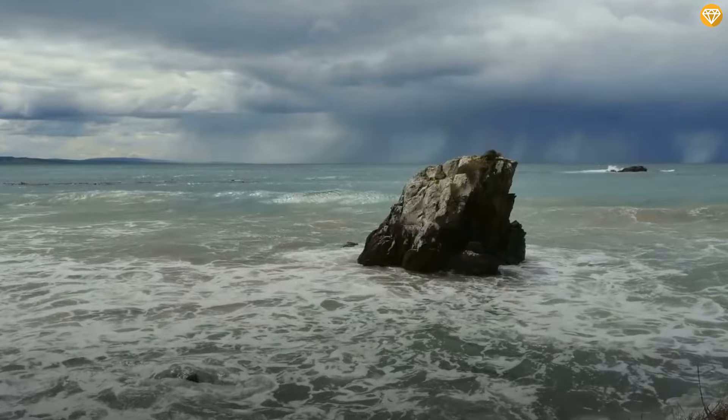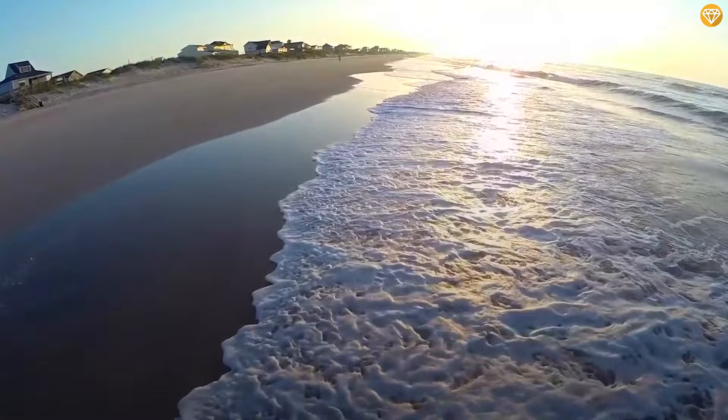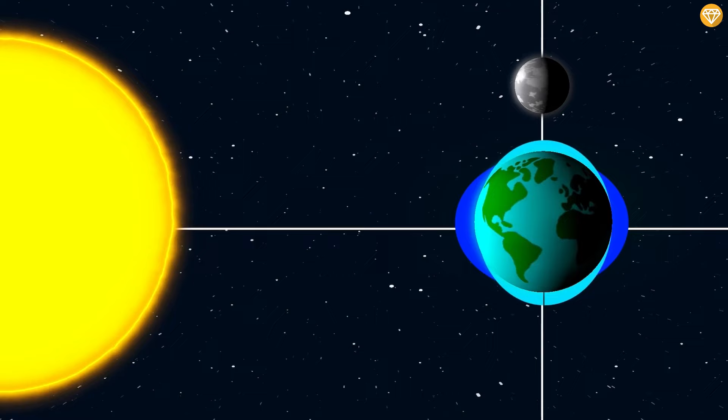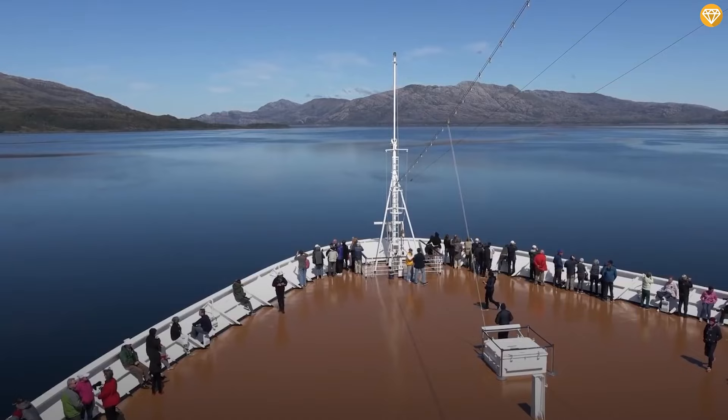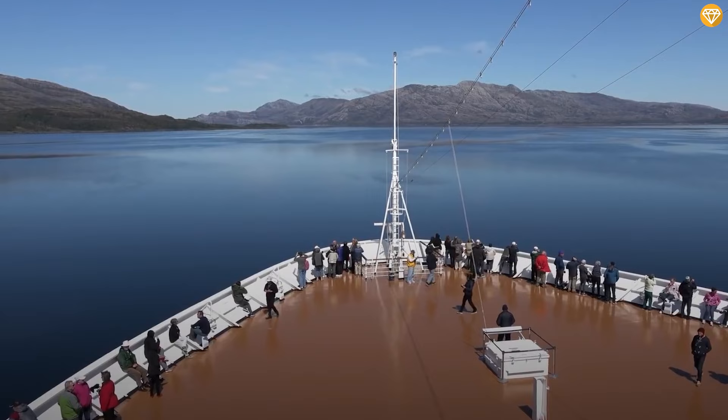There would still be tides, because the gravitational force of the sun also does its part over the Earth's water, although its attraction is less than that of the moon. In short, the tides would be reduced to one-third of their current size, and the oceans would become much calmer. The sea level would also be affected.